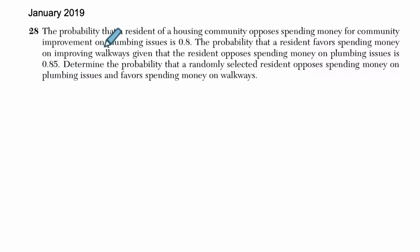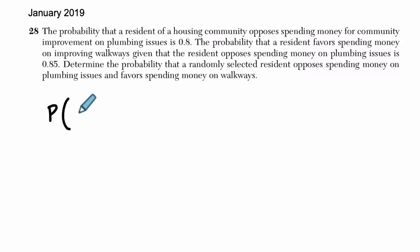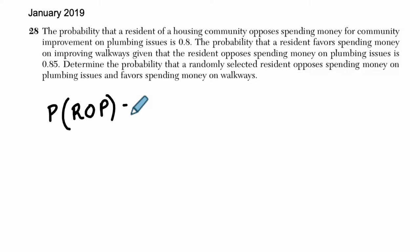So what am I talking about? Let's read it. The probability that a resident of a housing community opposes spending money for community improvement — so there's one class of person, there's a probability. We're going to look at a resident that opposes plumbing issues. I'm going to call that R-O-P, resident who opposes plumbing issues. And the probability of that happening, it says, is 0.8.